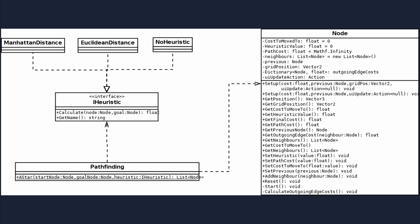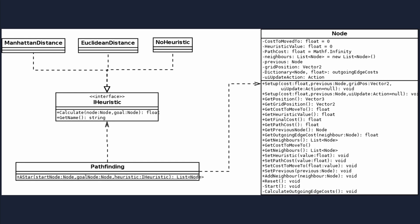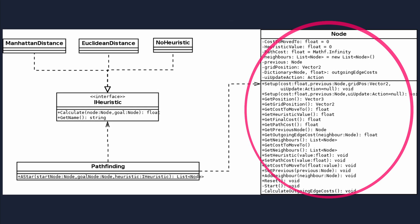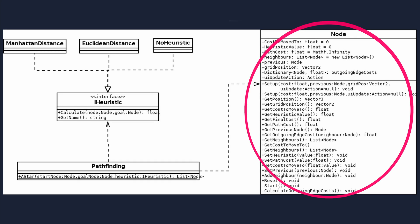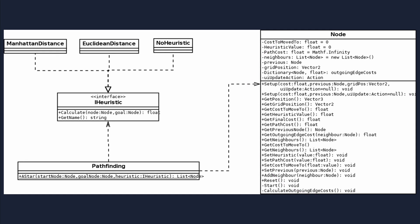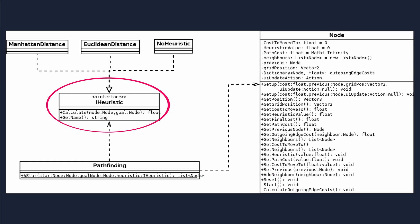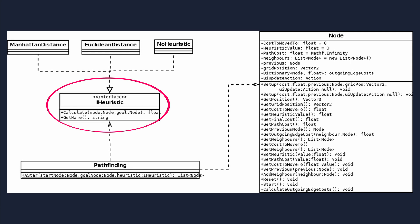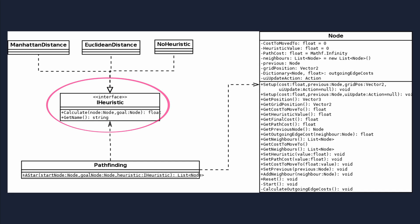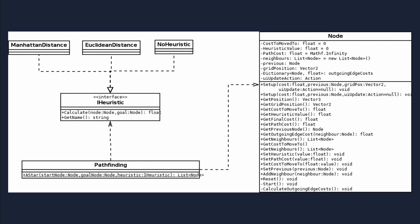With most of the groundwork already done, implementation was now rather simple. I began by designing the core of the system in UML, starting by creating a node class to hold details of each node in a graph, a pathfinding class in which I could implement A*, and some basic heuristics for which I could utilise dependency injection to supply A* with different heuristics at runtime.